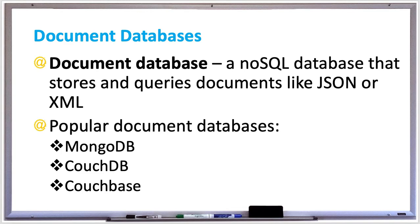Popular document databases include MongoDB, which is the most popular and highest ranked document database. Data is stored in binary JSON format, optimized for speed, and it's not human readable.